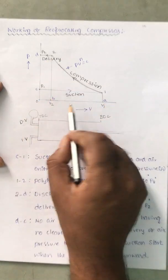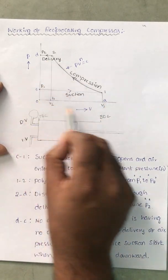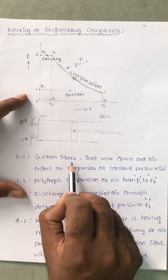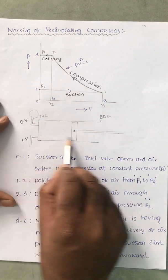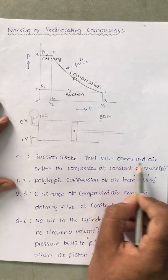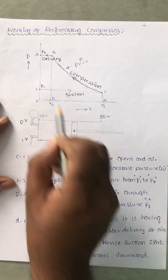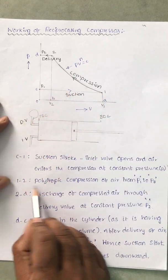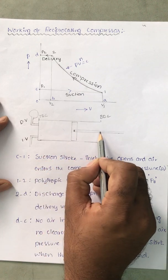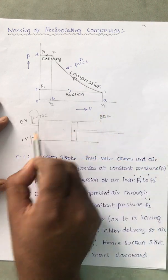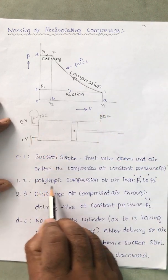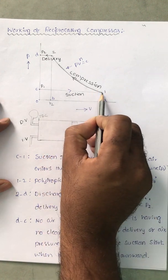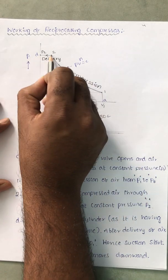If I represent the same thing on a PV plot — this is the pressure and volume axes — C1 is the suction stroke. That means the inlet valve is open and air enters the compressor at constant pressure P1. From the bottom dead center, as the piston moves upward, that is the compression stroke — a polytropic compression of air from P1 to P2.